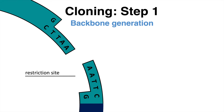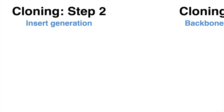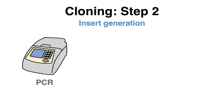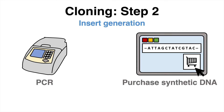Once the backbone is generated, the second step is the insert generation. There are different ways to generate the DNA sequence of interest — for example, PCR amplification of a gene from a genomic DNA sample, or purchasing a synthetic DNA fragment from a company.